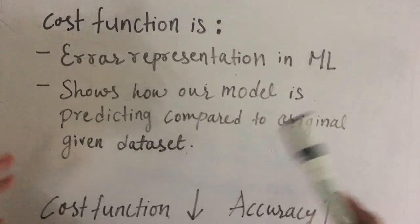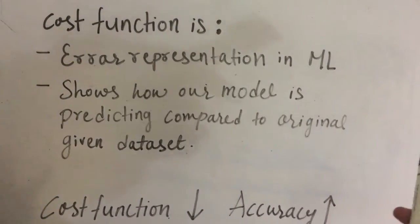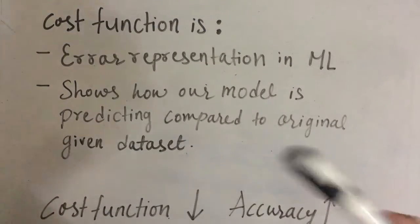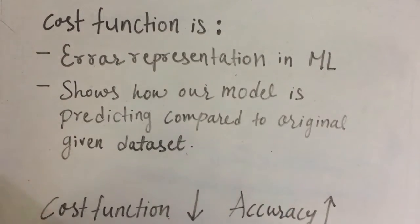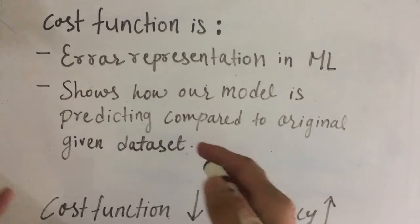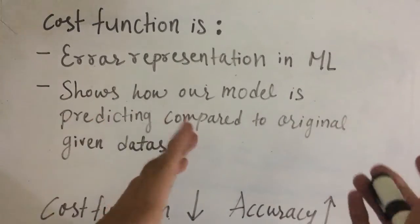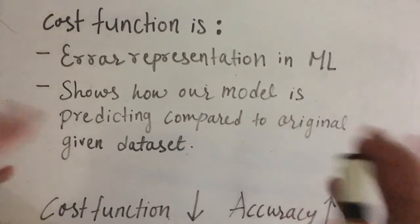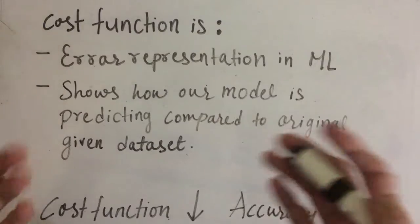Cost function in machine learning is an error representation of the model. It shows how our model is predicting compared to the original given dataset. For example, if we were to make 100 predictions and out of which 80 predictions are right, then we can say we have a lesser cost function because it has a lesser error.